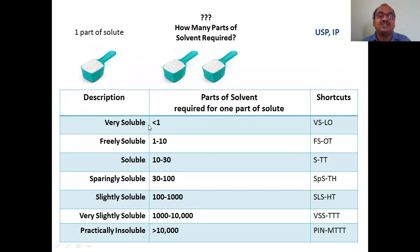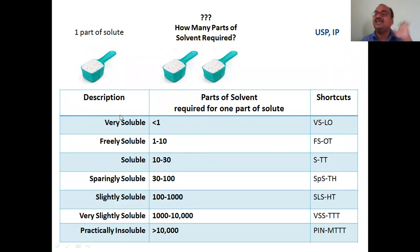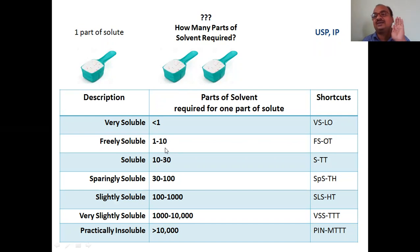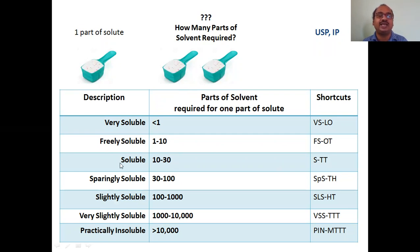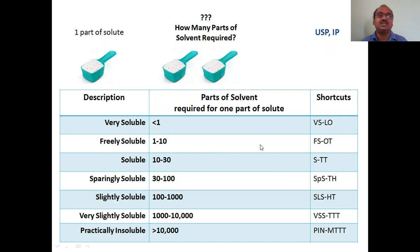Very soluble requires less than 1 part of solvent — that's why it is 'very soluble.' Freely soluble requires 1 to 10 parts. Soluble is the standard: 10 to 30 parts. Sparingly soluble requires 30 to 100 parts. Slightly soluble requires 100 to 1000 parts. Very slightly soluble requires 1000 to 10,000 parts.